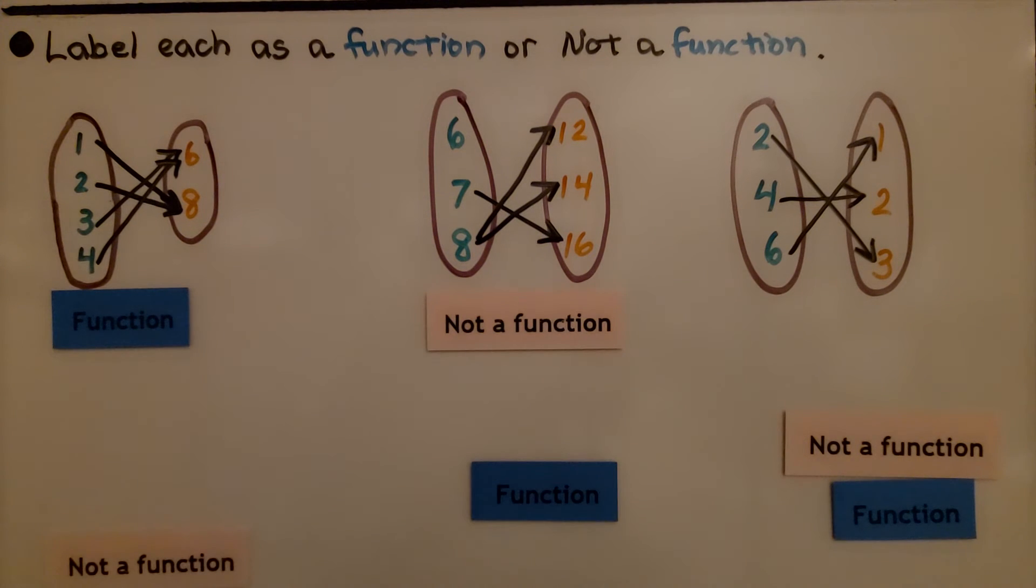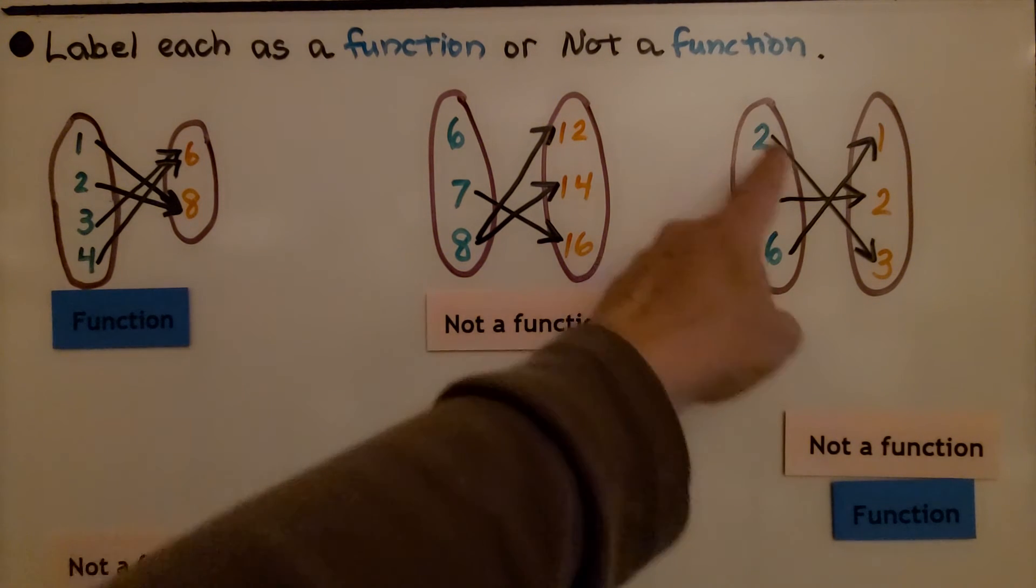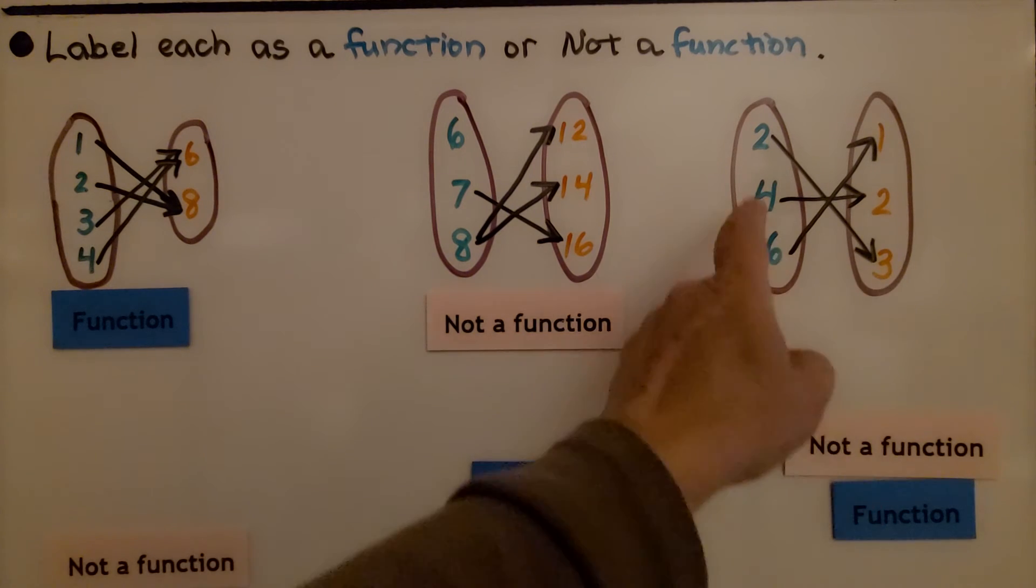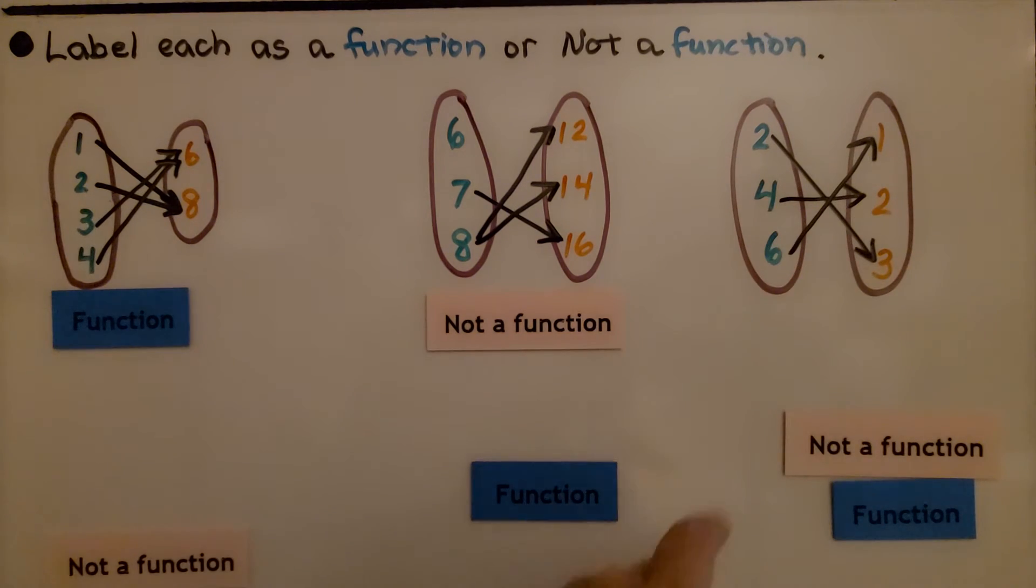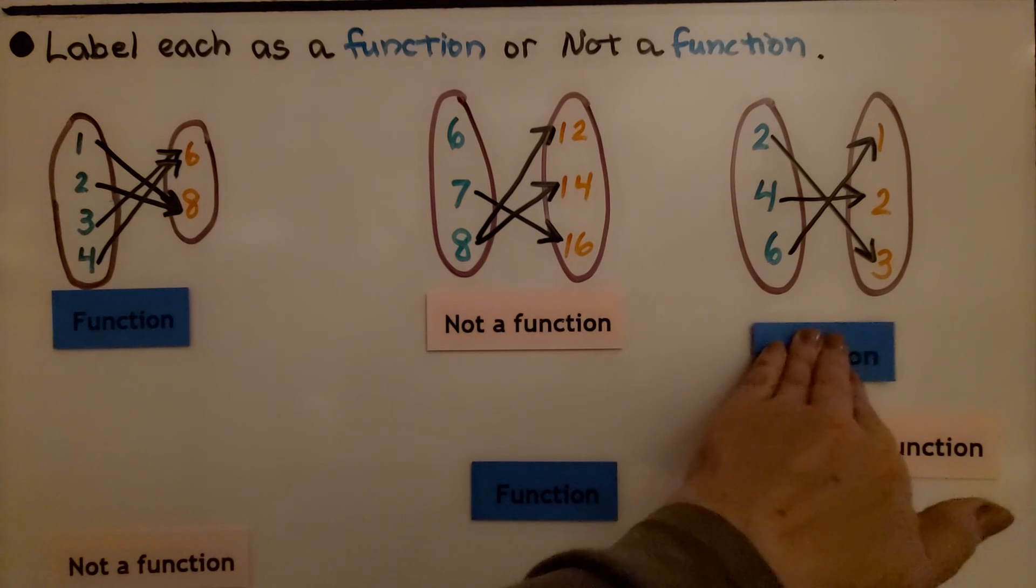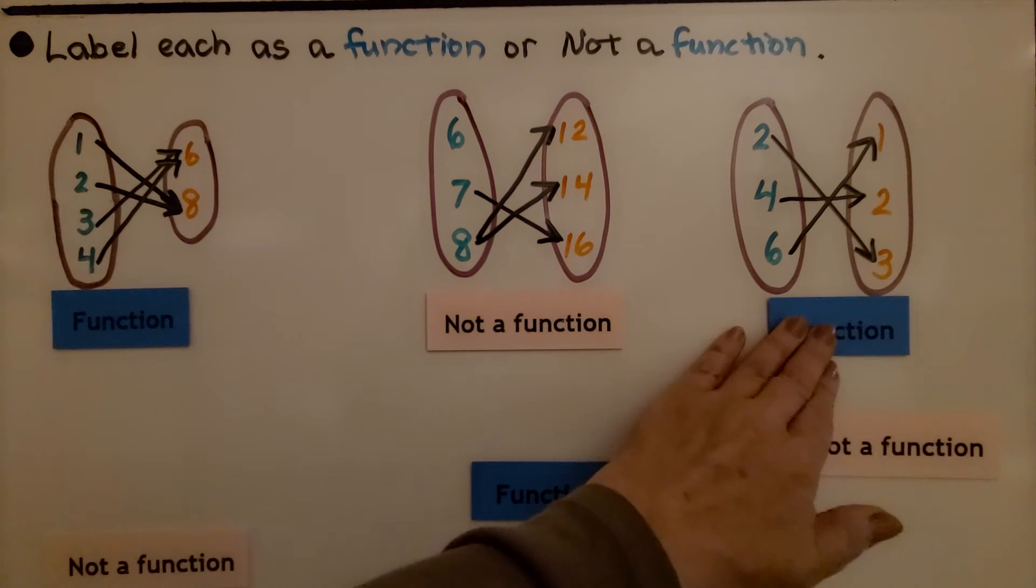Now let's take a look at this one. The 2 is being sent to 3 with one arrow, the 4 is being sent to the 2 with one arrow, and the 6 is being sent to the 1 with one arrow. Each input only has one arrow coming out of it. That is a function. Does that make sense? Do you get it now?